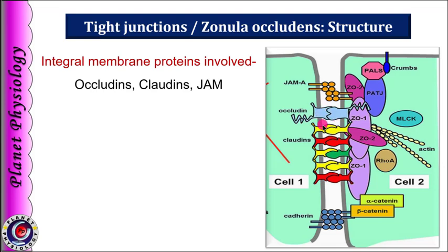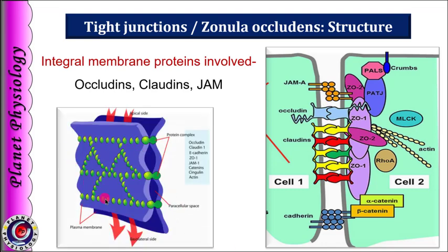These are occludins, claudins, and JAMs. Each of these proteins forms a network of strands, and such strands of neighboring cells are attached to each other with their extracellular domains, thus obliterating the intercellular space. Intracellular domains of these proteins attach to the actin filaments through peripheral proteins. Thus, tight junctions join the cytoskeletons of two adjacent cells and occlude the intercellular space.